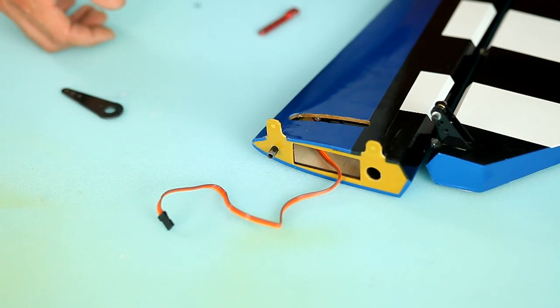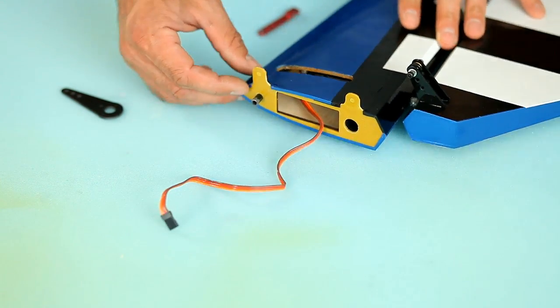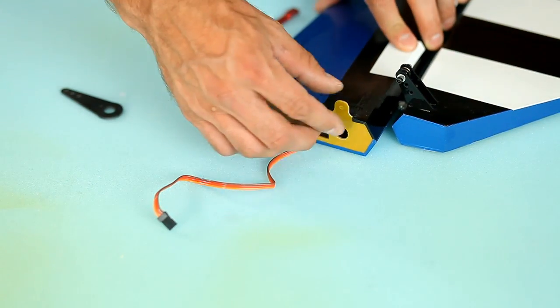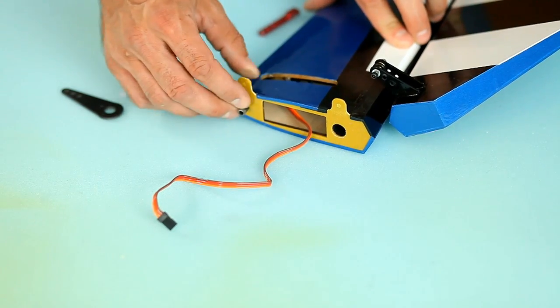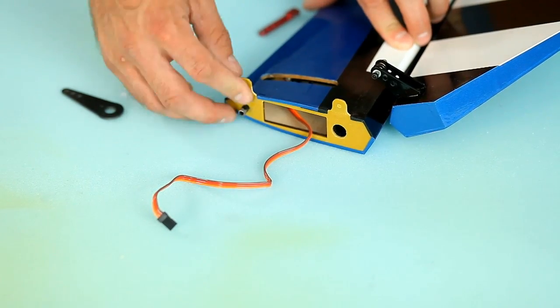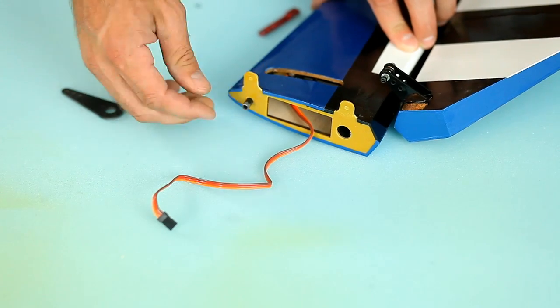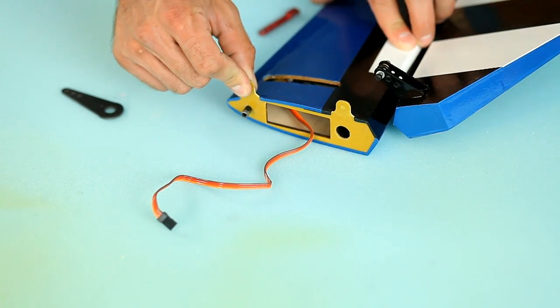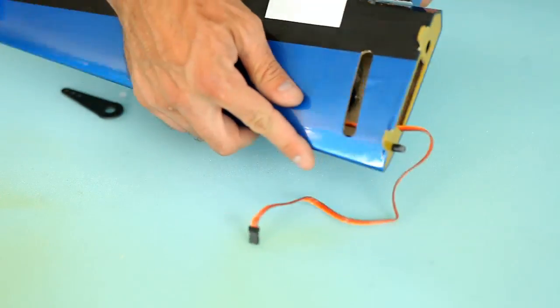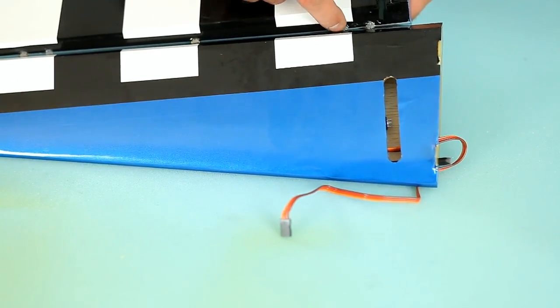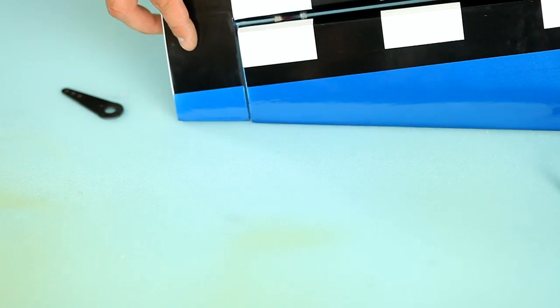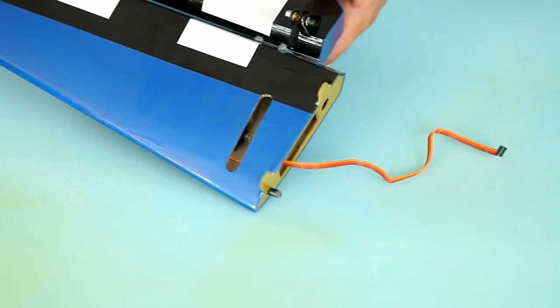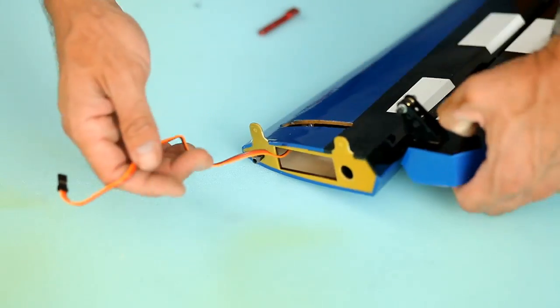And then just real quickly before I continue, I want to point out the fiberglass, the phenolic material that we have at the end of our stabs here. It's very rigid. It adds a lot of strength so your stabs don't flex and move and you don't crush this wood every time you bolt them down. And also, I didn't point this out when we were hinging, but we've got double points on our ailerons and on our elevators. We've got two hinges at the ends of each of those surfaces. So that's a really nice feature as well that you find in Red Wing planes.